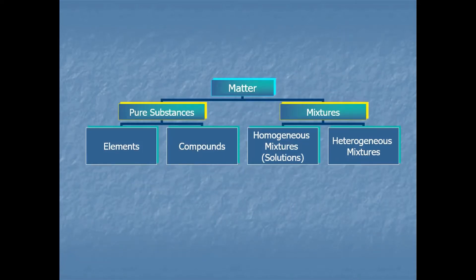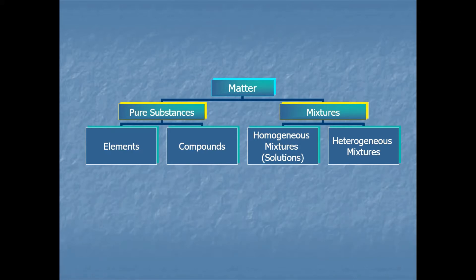Here's the chart: matter can be broken up into pure substances and mixtures. Mixtures have varying compositions. For example, salt water is a mixture — it has salt and water, and the proportion of salt can vary. You can have a lot of salt or very little and it's still salt water. But you can't change the ratio in water itself without it no longer being water.